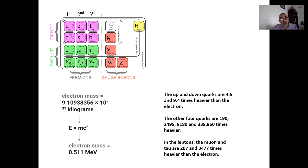The neutrinos are extraordinarily light particles. For a long time they were thought to have zero mass, but now we know they do have mass — but an extremely small mass. The electron is about half a million electron volts, while the neutrino weighs less than 2.2 electron volts. Nobody knows its exact mass.